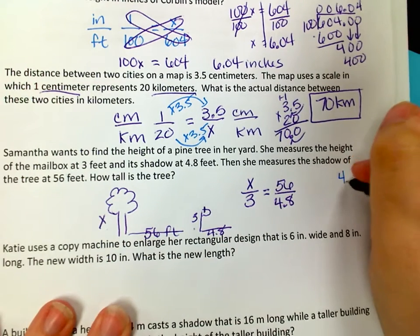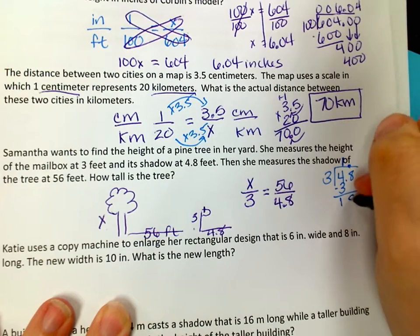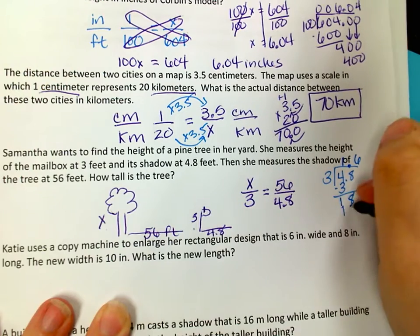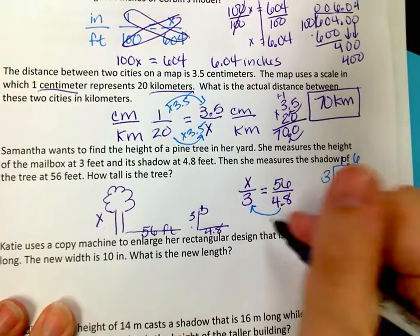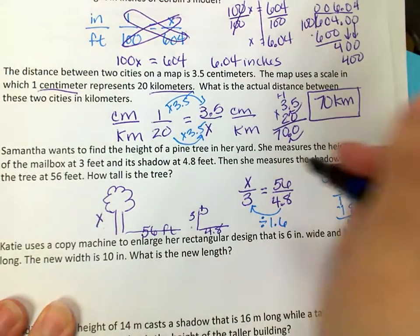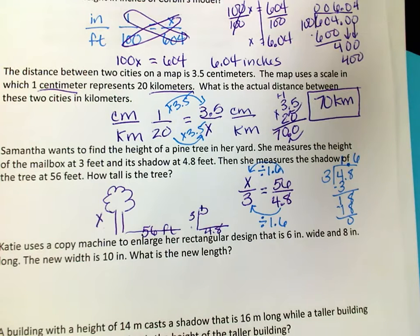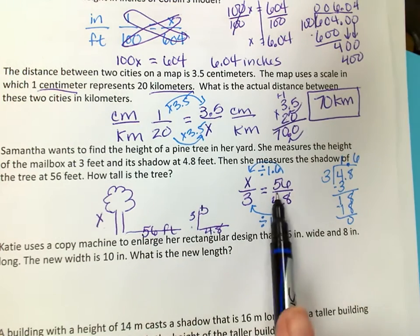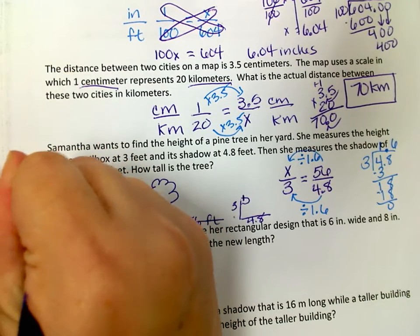I'll find the relationship by dividing 4.8 by 3: 3 goes into 4 once giving 3, subtract to get 1, bring down 8 to get 18, and 3 times 6 is 18. So that's 1.6. This means I'm dividing from one ratio to the other by 1.6, so from here to here I also divide by 1.6. You can do cross products too — I'm just showing different approaches.